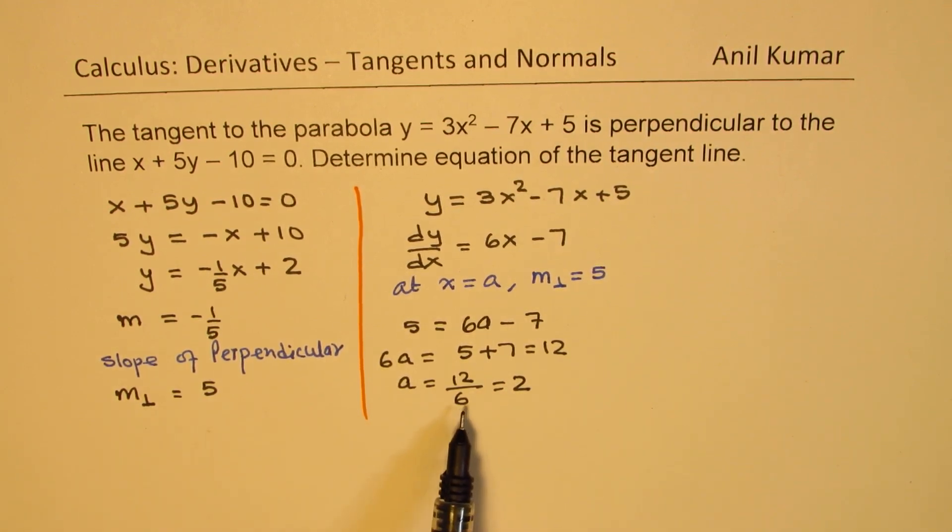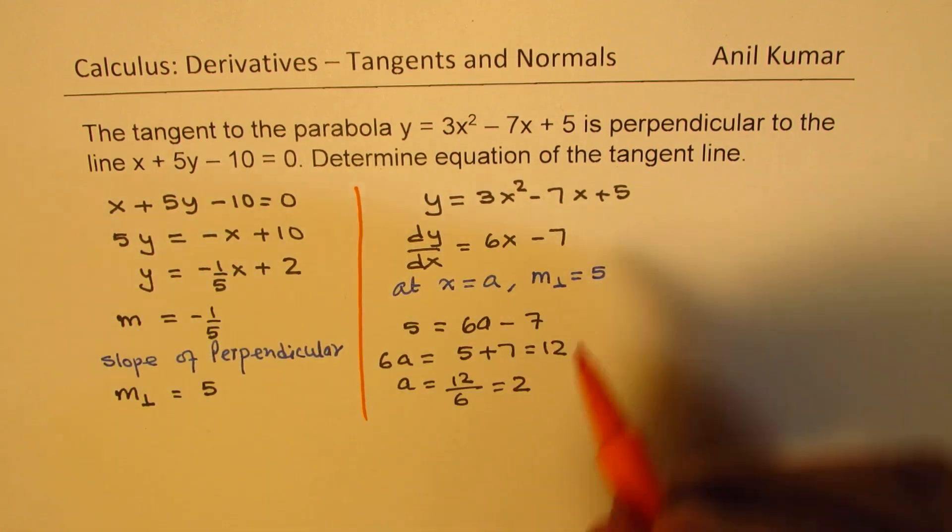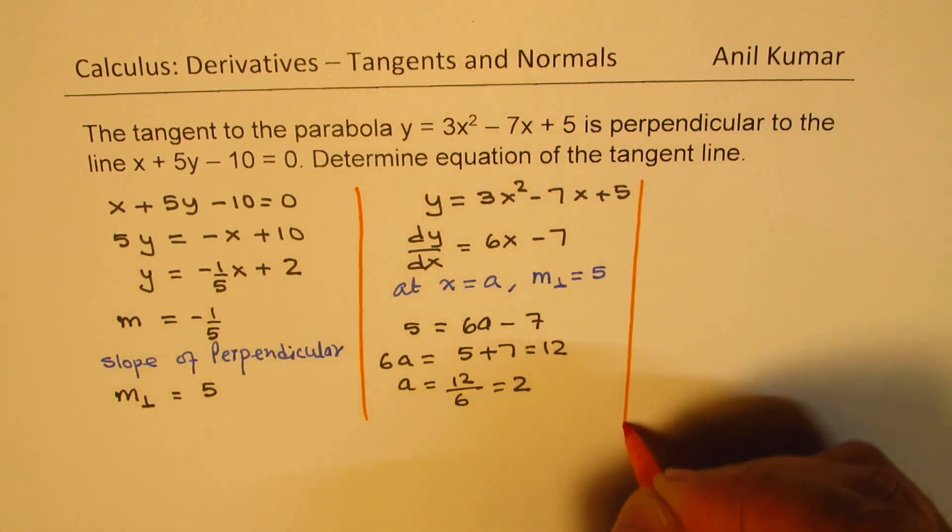So, the x value is 2, at which the slope is 5, which is perpendicular to the given line. You get the concept. So, now, the question is to find the equation of this tangent line.